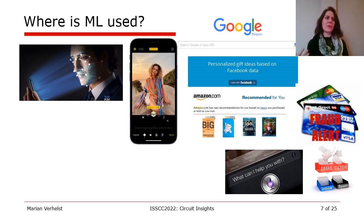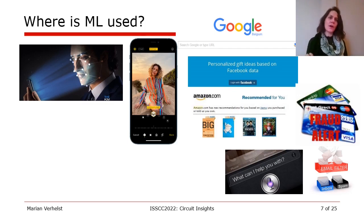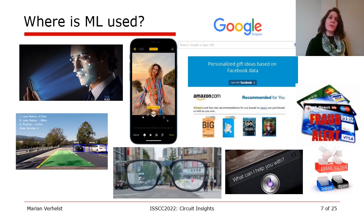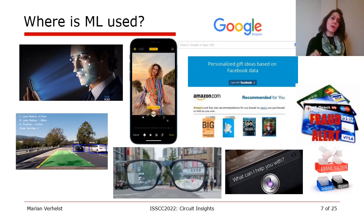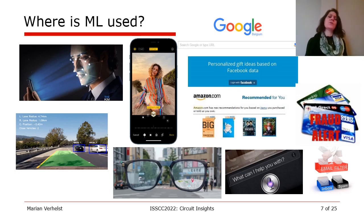Even when I take a picture with my phone, machine learning is used to distinguish background from foreground, to distinguish different types of features, settings, and filters. And obviously more and more objects become smart — like the smart car, smart glass — all using machine learning algorithms. So it's really everywhere around us.